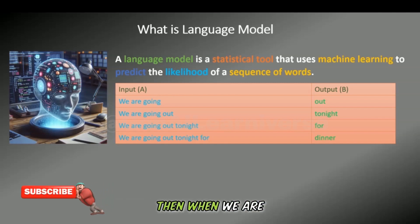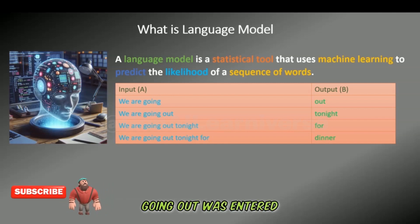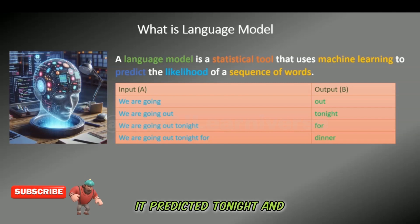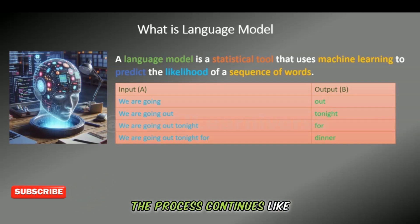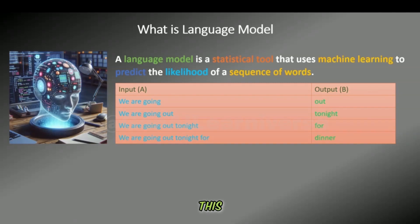and an element of randomness. Then, when 'we are going out' was entered, it predicted 'tonight.' And the process continues like this.